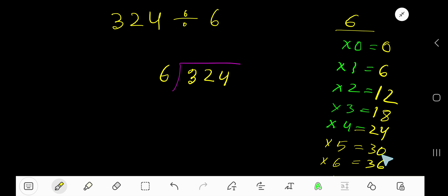18 plus 6 is 24, 24 plus 6 is 30, 30 plus 6 is 36. Okay, now 6 is a divisor. So 6 goes into 3 how many times? 0 times, as 3 is less than 6. So 0 times 6 is 0, subtract.